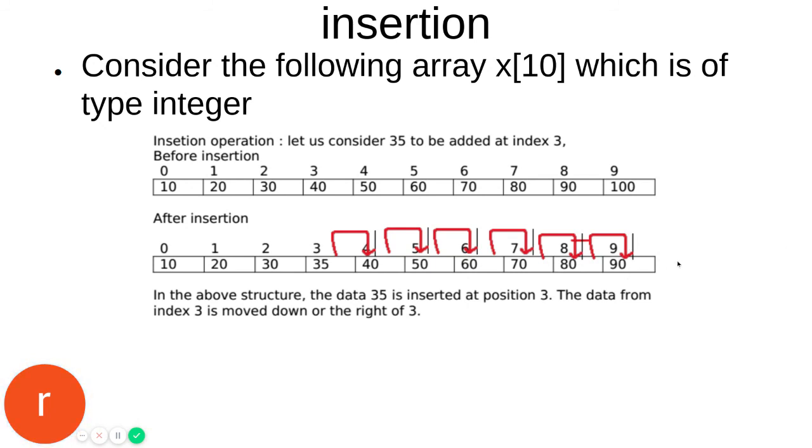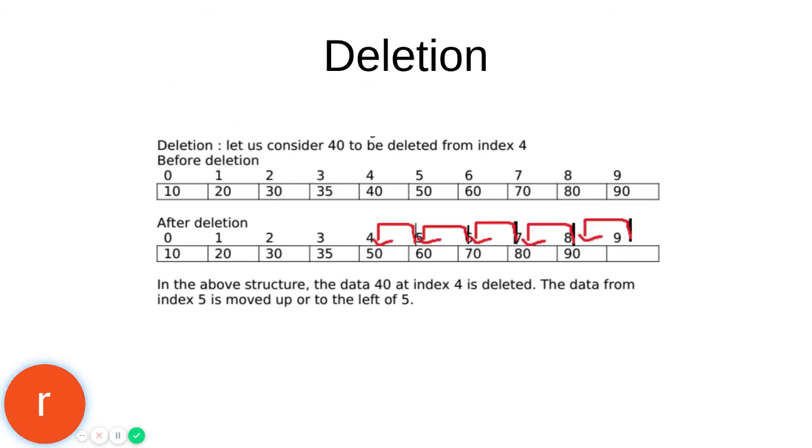Deletion can be done by moving towards the left. Here we are going to delete the value present at position 4, which is 40. How can it be done? By overwriting. The element from the fifth place moves to 4, from 6 to 5, and so on. After doing that, the value will be moved up. This is called deletion because since it is overwritten, 40 no longer exists.